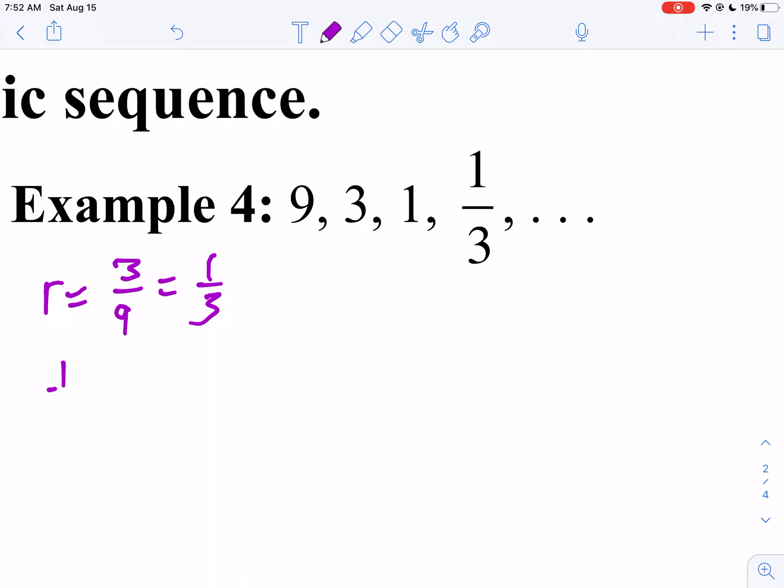So our next term is one third times one third. I don't want a decimal, because it gave me as a fraction. So my answer is one ninth. And then I take one ninth times one third, and that's one twenty-seventh. I take one twenty-seventh times one third, and that's one over 81. There are your next three terms. It's just really doing one over the geometric sequence, isn't it?